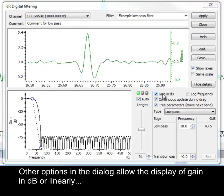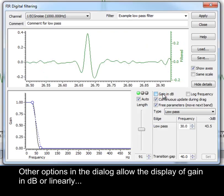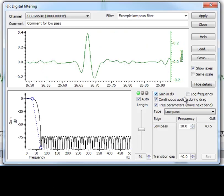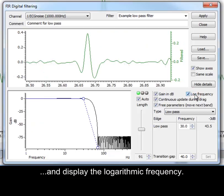The other options in the dialog allow the display of gain in dB or linearly, and display the logarithmic frequency.